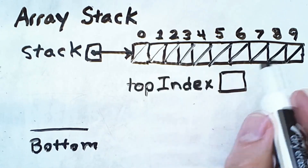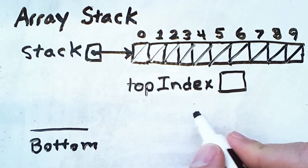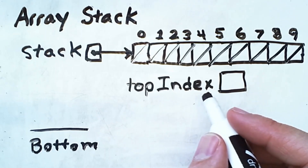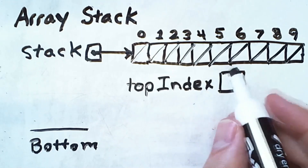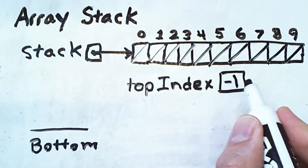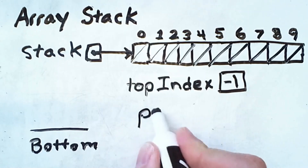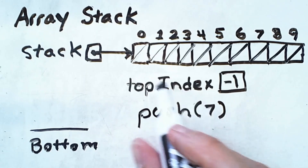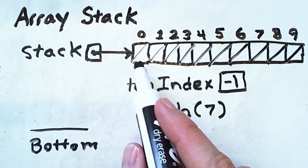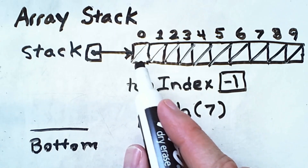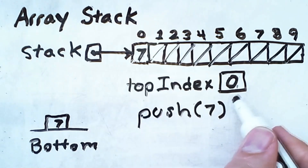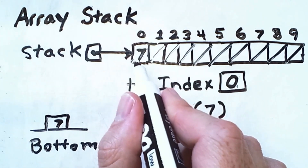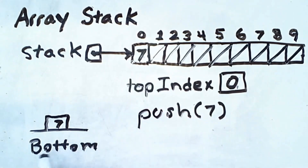In addition to the array, we will also track an integer variable named 'top index' that indicates which index within the array the top of the stack currently is. Since the stack is empty, the top index will be negative 1. From here, we can begin pushing items onto the stack. If I push a value of 7, it will go into the first available unoccupied index in the array. Note that we also increment the value of top index so that it becomes 0, indicating that index 0 contains the element on top of the stack.